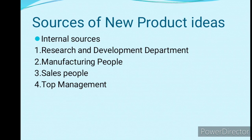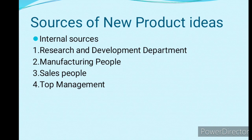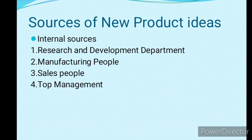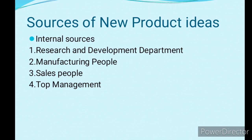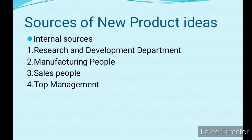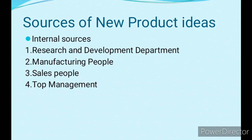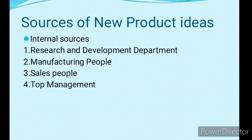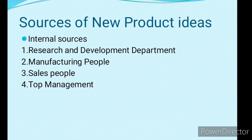Regarding the research and development department, continuous analysis is done and research on existing products is conducted. Specialized persons are appointed for this to develop a good product. Manufacturing people are those who manufacture the product — like engineers, skilled workers, and scientists — who regularly create ideas for product modifications and improvements.